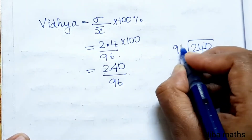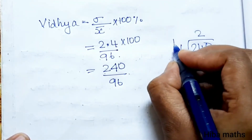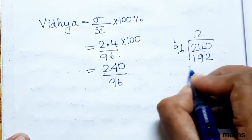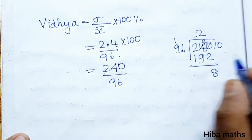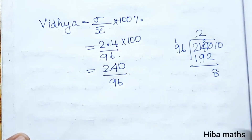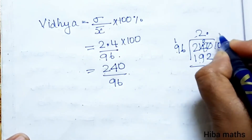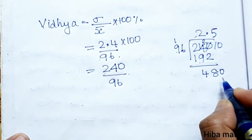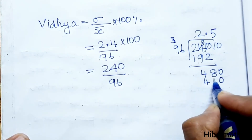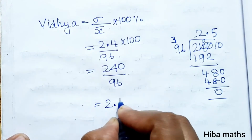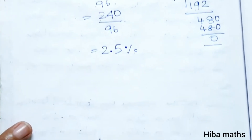For Satya: 4.6/92 × 100 = 5%. For Vidya: 2.4 divided by 96 into 100. Working through the division: 2.4/96 × 100 = 2.5%. So Satya's coefficient of variation is 5% and Vidya's is 2.5%.